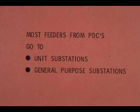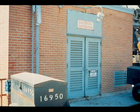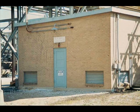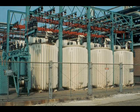Most feeders from PDCs go to substations, which one large plant classifies as unit substations or general purpose substations. A unit substation serves a single process unit — for example, PSLA-10 substation serves number 10 pipe still. A general purpose substation is not limited to serving a single unit; one such substation is S-10, named because it is on Avenue S and 10th Street. At substations, transformers step down 13,800 volt current to 2,400 volts, 480 volts, 240 volts, 120 volts, or other required voltages.